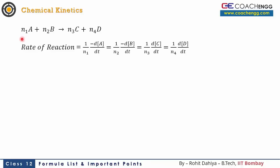Let's talk about rate of reaction. Here we have a general balanced equation: N1 moles of A will react with N2 moles of B, producing N3 moles of C and N4 moles of D. The rate of reaction can be denoted using the individual components of the rate of change.